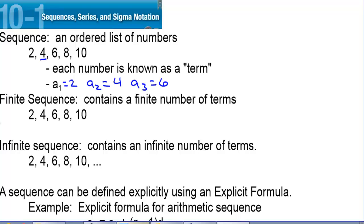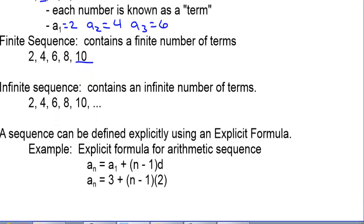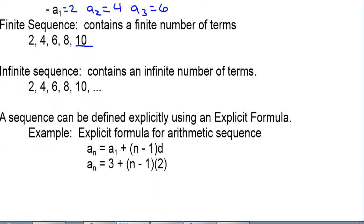A finite sequence contains a finite number of terms — in other words, the sequence stops. This one stops at 10. An infinite sequence contains an infinite number of terms, and we denote that this is an infinite sequence by using dot, dot, dot.